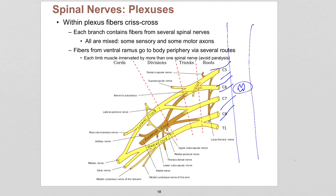For example, consider a muscle like the deltoid in the shoulder, which would be getting innervation from around spinal nerves C5, C6, and C7. If 100% of the motor neurons that connect to the deltoid all ran through C5, that would mean that if you damage C5, the muscle would be completely paralyzed. The whole concept of a plexus is that we don't want that to happen — don't put all your eggs in one basket. We mix and criss-cross it, sending those motor neurons out of C5, C6, and C7, so that if one of them gets damaged, the others can at least allow some movement by the muscle.